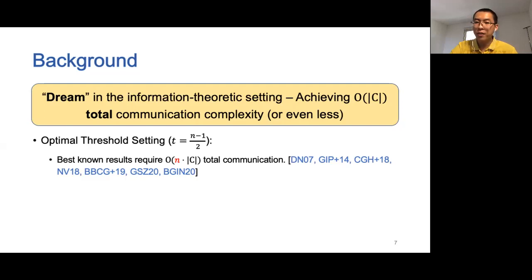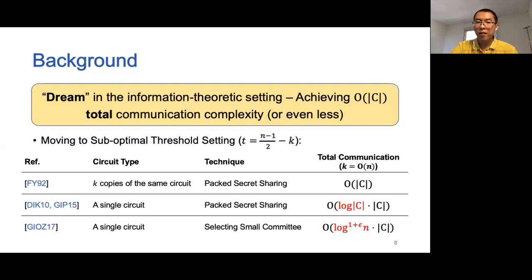In the so-called optimal threshold setting, where T is equal to (N-1)/2, best-known results require O(N·C) total communication. When we move to the sub-optimal case, where there is a gap K between T and (N-1)/2, the work by Franklin and Yung introduced the packed secret sharing technique that allows storing multiple secrets within a single sharing. Relying on this technique, they showed how to evaluate K copies of the same circuit such that the amortized communication complexity per circuit is O(C).